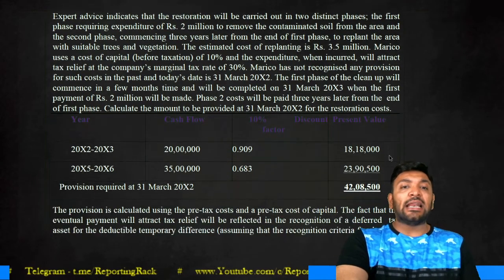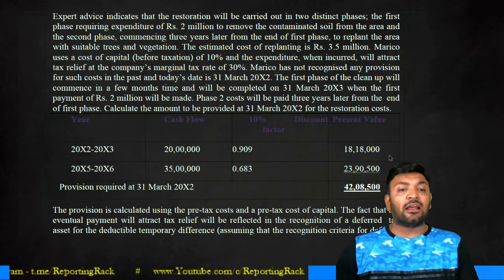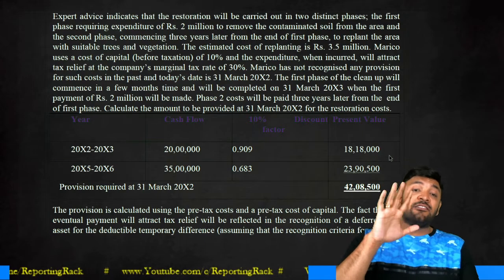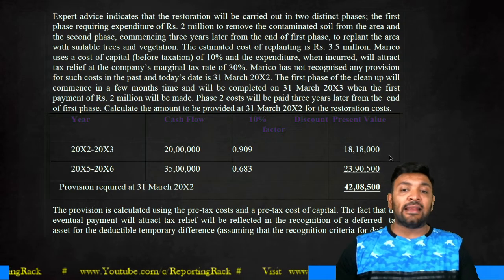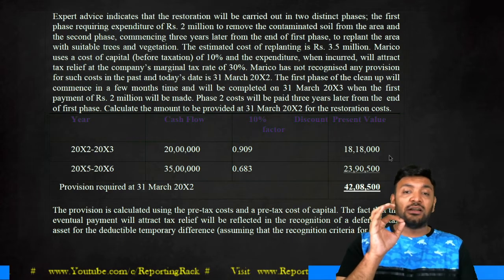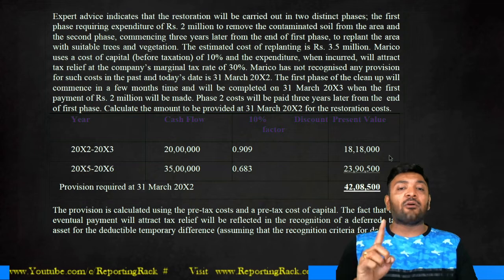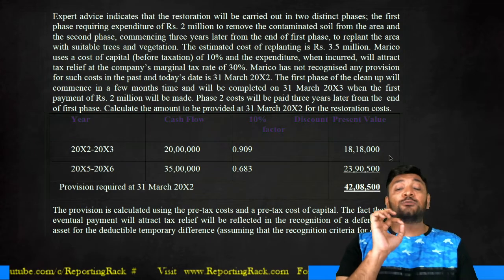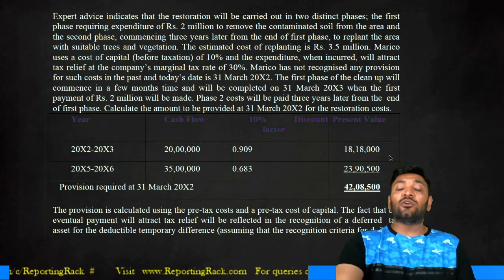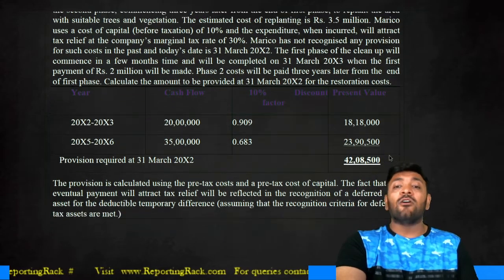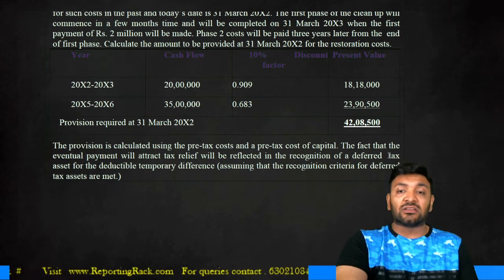Calculate the provision. The first phase of 2 million is discounted for one year at 10%. For the second phase, 3.5 million is due in 2016, which is four years from 31st March 2012, so the discount factor at 10% for four years is 0.683. Based on present value factors — PV factor of 10%, one year for Phase 1 and PV factor of 10%, four years for Phase 2 — the total present value is 42 lakh 8,500, which should be recognized as a liability on 31st March 2012.